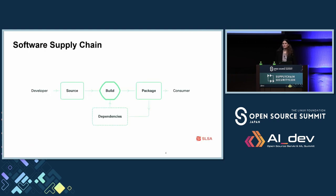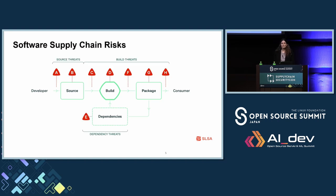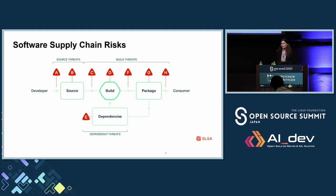This is the process of a software supply chain. A developer is contributing code to source control, after that it goes for build, and then it goes to an artifact — might be a package, might be something else — and then consumed by a consumer, might be a developer, might be whoever you want. The SALSA framework created this diagram and divided it into three different group threats: source, build, and dependency. In this talk, I will mostly focus on dependency threats, which I believe are the Wild West — which makes them the most interesting part.